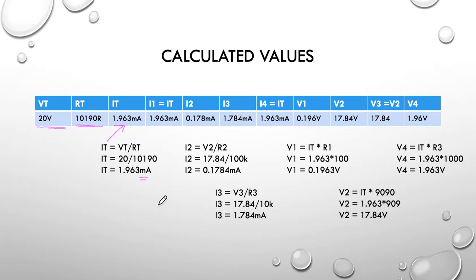The current in I1 is the same as I total, so 1.963 milliamps. I2, we had to calculate: V2 divided by R2. 17.84 divided by 100k tells me there's 0.178 milliamps. I3 is exactly the same because they're parallel with each other. Then I4 is a normal part of the circuit, so I4 is I total at 1.963 milliamps.